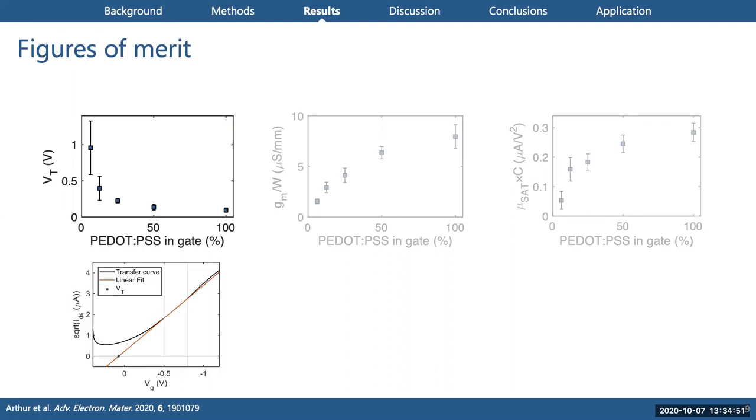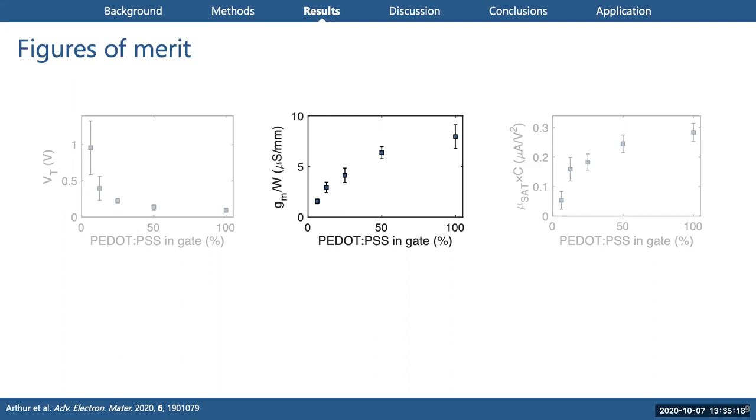What's interesting to note about the data here overall is that we approach a plateau as conductance increases. So beyond a certain conductivity, we no longer see significant performance gains in the device. Here are some other important figures of merit. The threshold voltage here is just the theoretical minimum gate voltage required to start turning the device on, extrapolated by the standard method from the transfer curve.